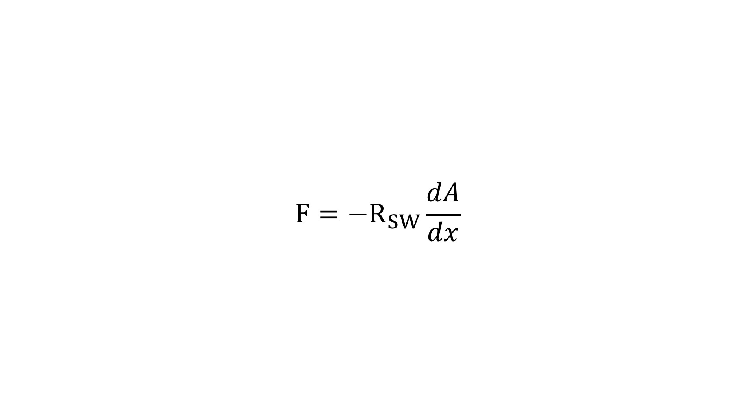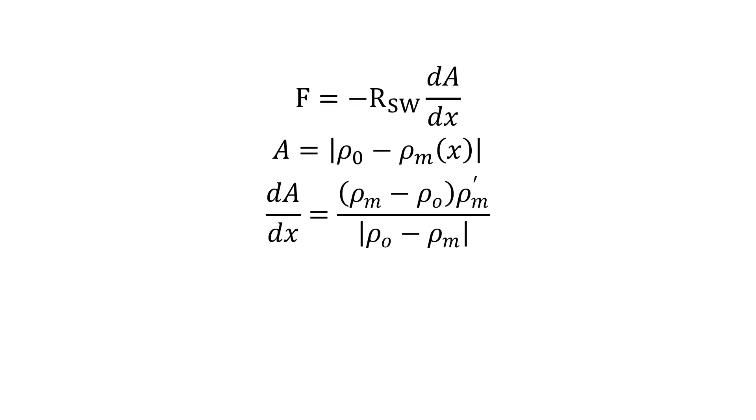Now given that A is the absolute value of the object's density less the medium's density, and the medium density is a function of x, we then get that the derivative is given by this expression where the prime indicates the first derivative with respect to x.